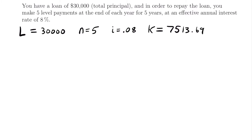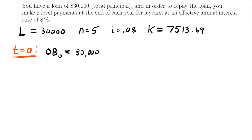Now that we have K, we can start looking at the calculations for the loan repayment process using the amortization method. Let's begin at time equals zero. At time equals zero, we're starting with an outstanding balance of the entire loan amount — we haven't paid anything yet. We're not going to make a payment until year one. So the outstanding balance at time equals zero is equal to $30,000.